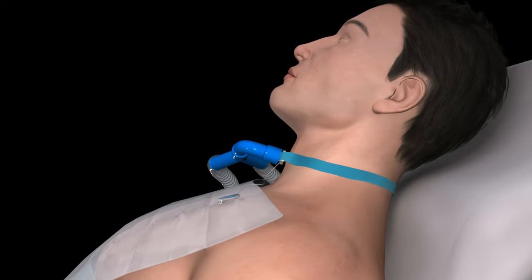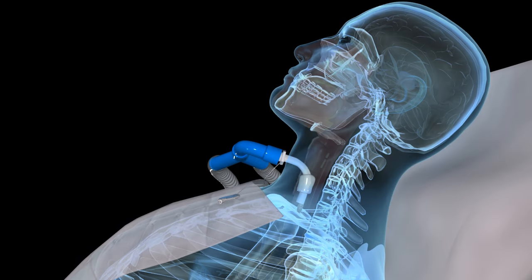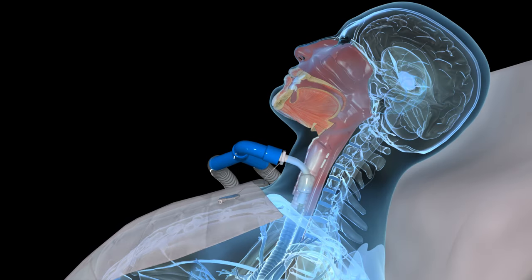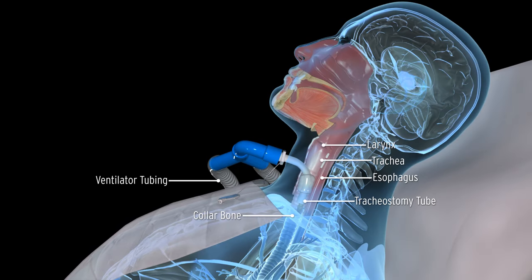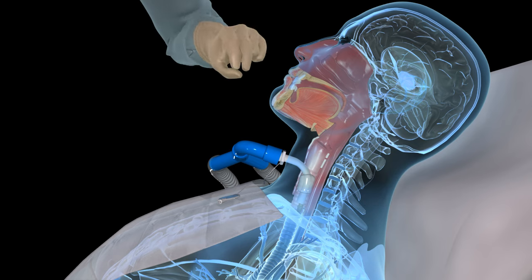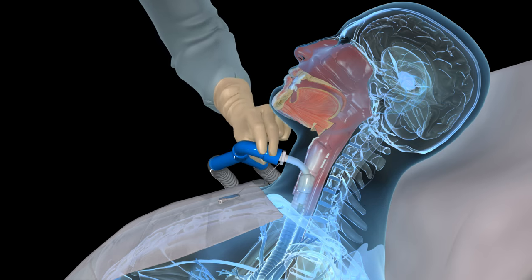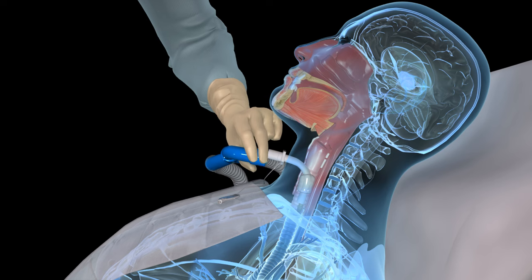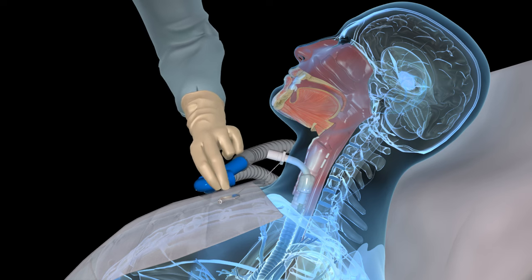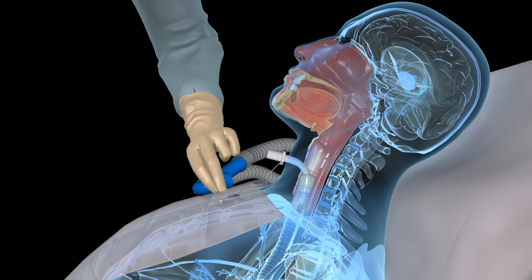Tracheostomy tube suctioning is performed to maintain the patency of the artificial airway. Pre-oxygenate the patient for 30 to 60 seconds.